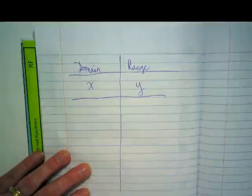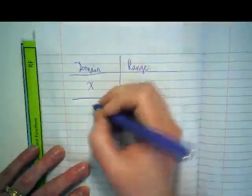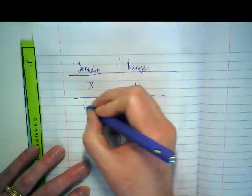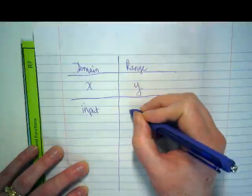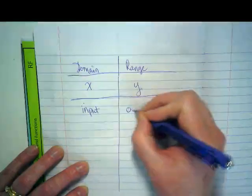Which gives us another important fact about domain and range. Domain is always our input, which means that range would always be what? The output. The output, yep.